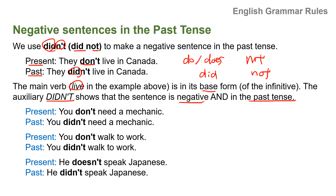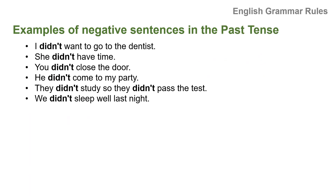More examples: Present — you don't need a mechanic; Past — you didn't need a mechanic. Present — you don't walk to work; Past — you didn't walk to work. Present — he doesn't speak Japanese; Past — he didn't speak Japanese. Negative sentence examples: I didn't want to go to the dentist. She didn't have time. You didn't close the door. He didn't come to my party. They didn't study, so they didn't pass the test. We didn't sleep well last night.